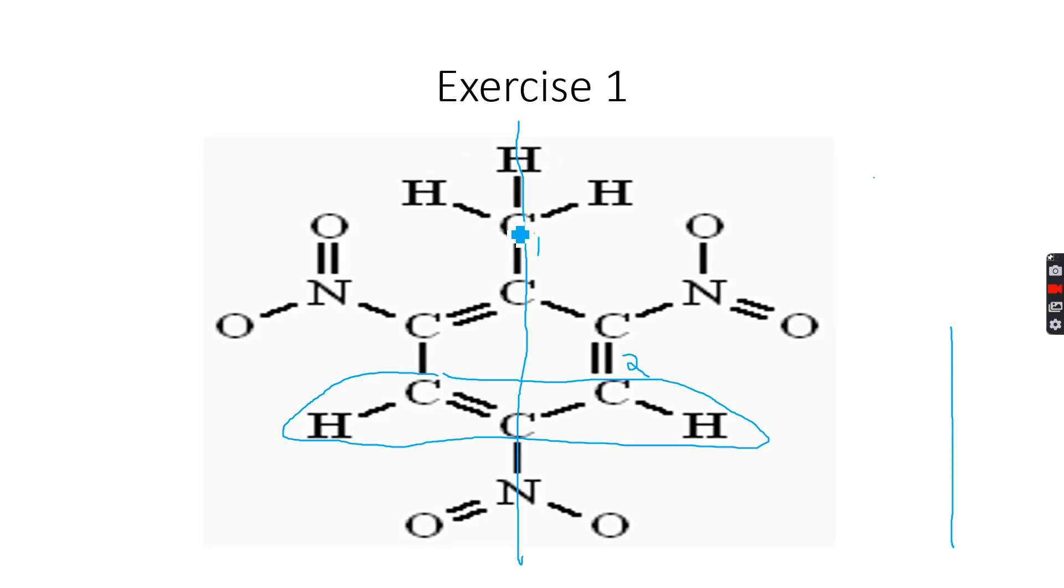Hydrogen atoms on this carbon atom will give us a singlet integrated to three, and we'll get another singlet integrated to two because we have two hydrogen atoms corresponding to the same peak. So this is because of three, this is because of two.